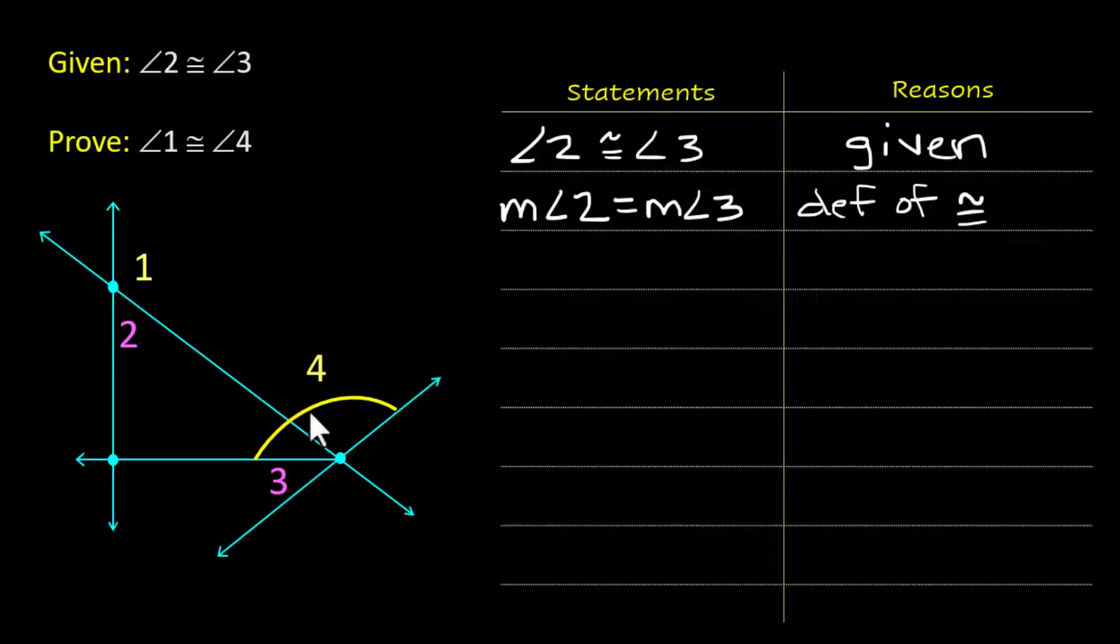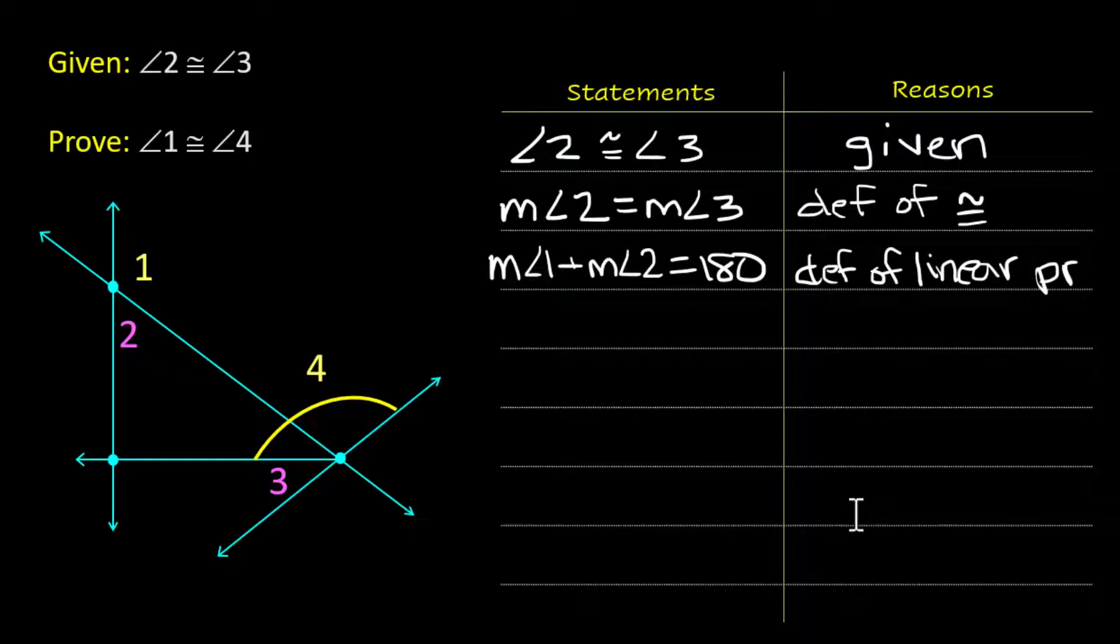Angle 1 and angle 2 add up to 180. That's the definition of a linear pair. They're supplementary, that would work too. But I'm going to go ahead and just go with linear pair. And the same thing is true for angle 3 and 4. Same reason.